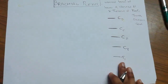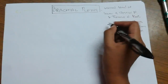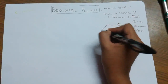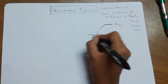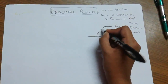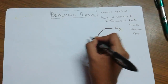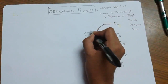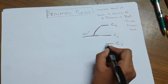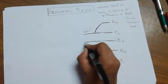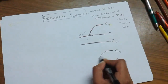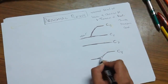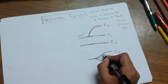These roots combine to form trunks. C5 root and C6 root combine to form the upper trunk. C7 continues to form the middle trunk. C8 combines with T1 to form the lower trunk.